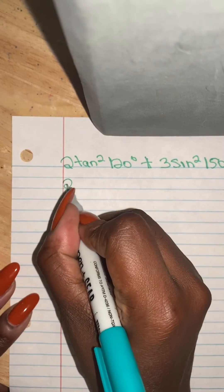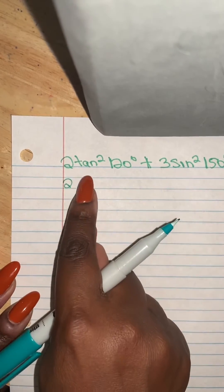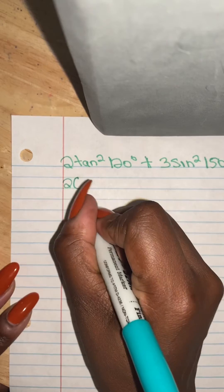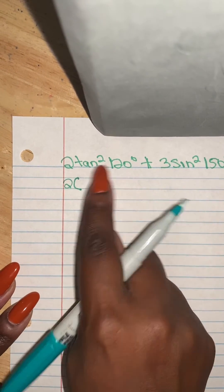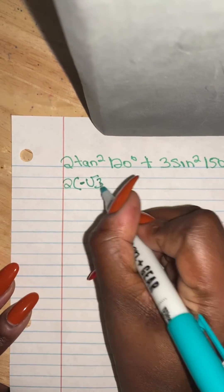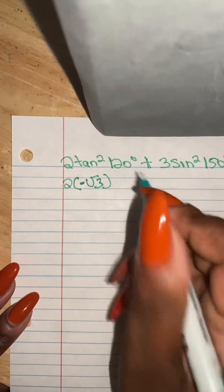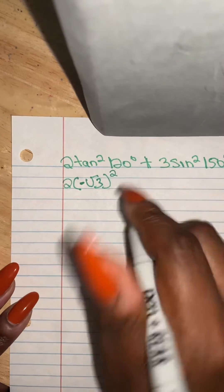So let's begin here. First we have to find the value. What is the value of tangent 120 degrees? It's about negative square root of 3. And then we also keep the exponents here. Plus.